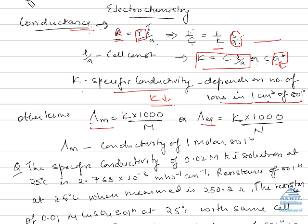The molar conductance or conductivity is equal to kappa times 1000 over M, meaning the conductance of a solution containing one mole of an electrolyte. Equivalent conductivity is equal to kappa times 1000 over N, where N is the normality of the solution.